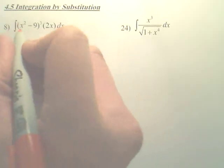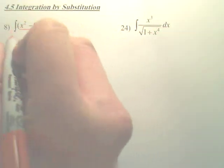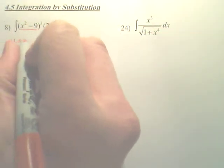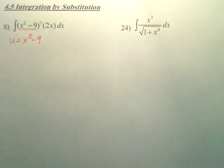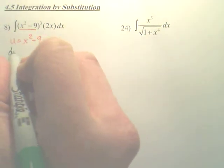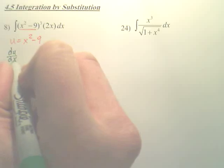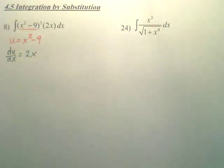And so what you look for — you look at this and go, oh, if I derive that, I get this. Alright, so I'm going to call that inner piece u. Now next, I'm going to derive u. When I derive u, don't you have du/dx equals 2x?